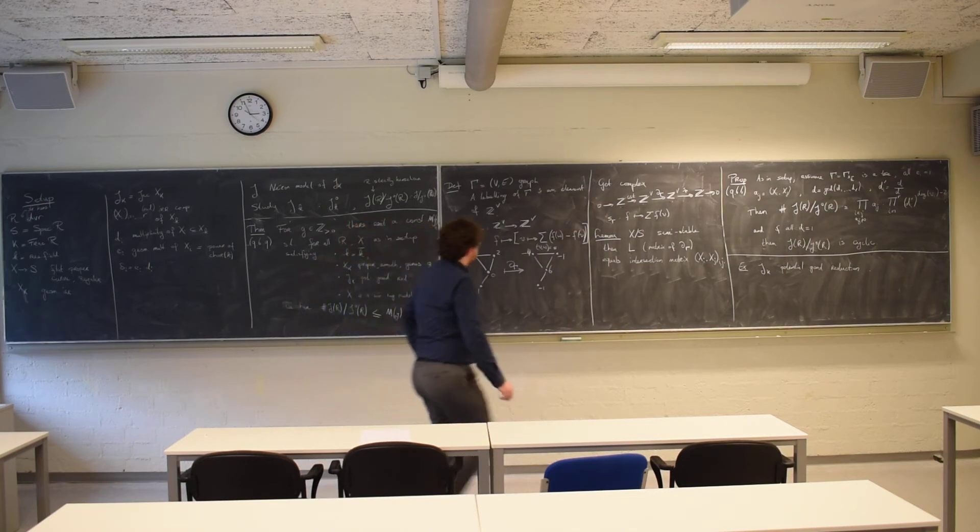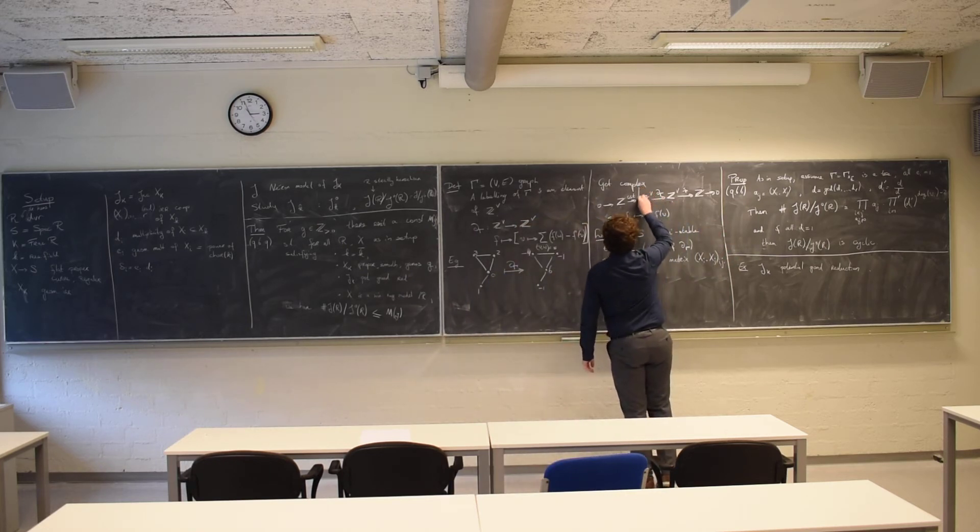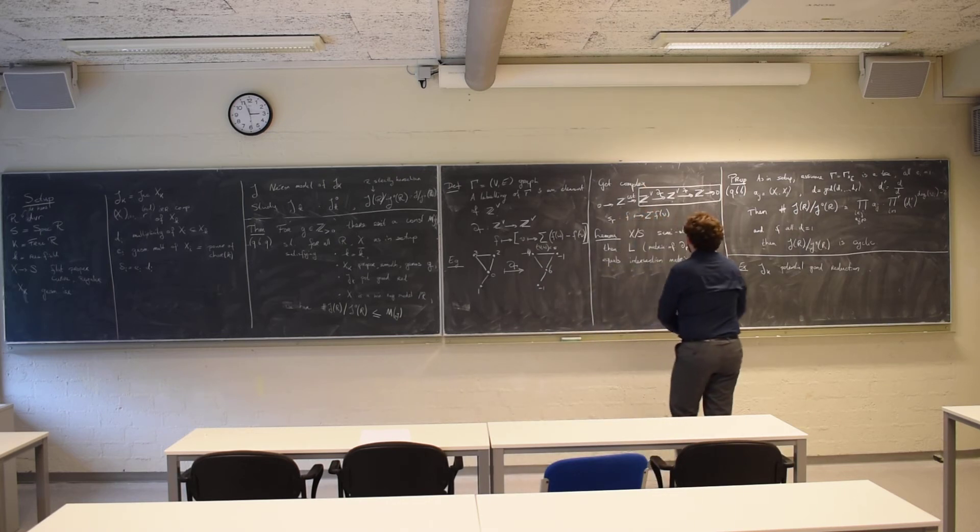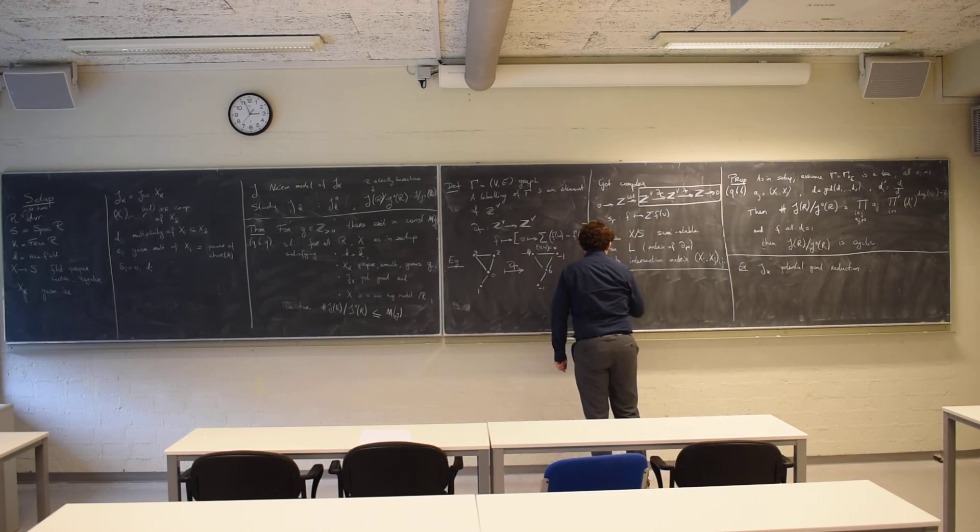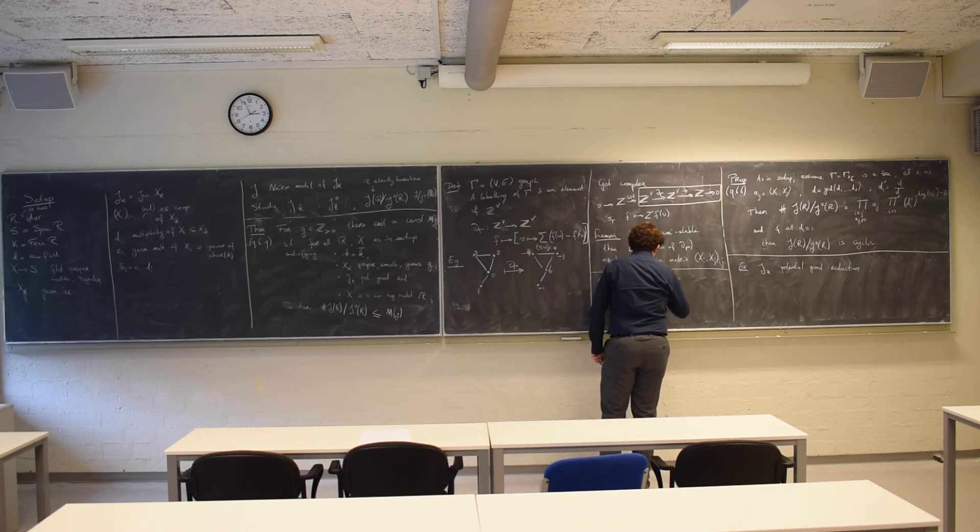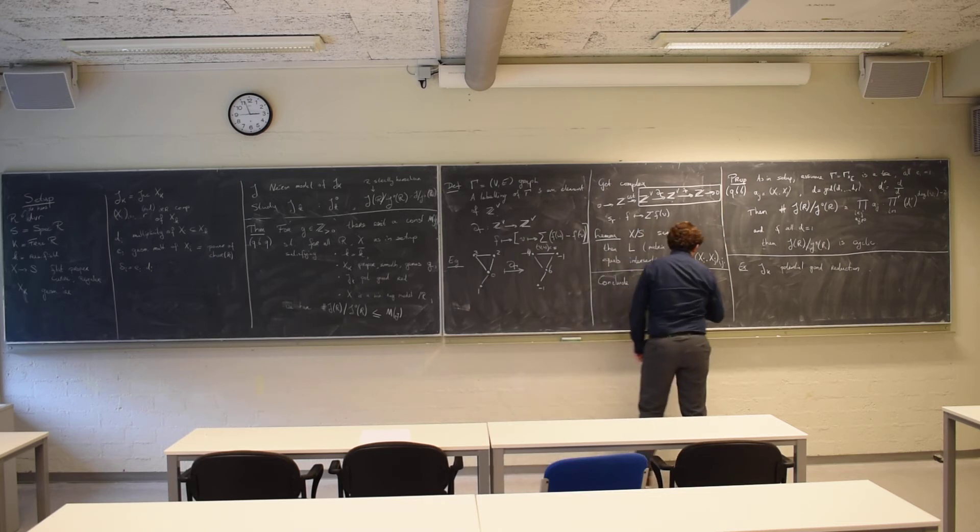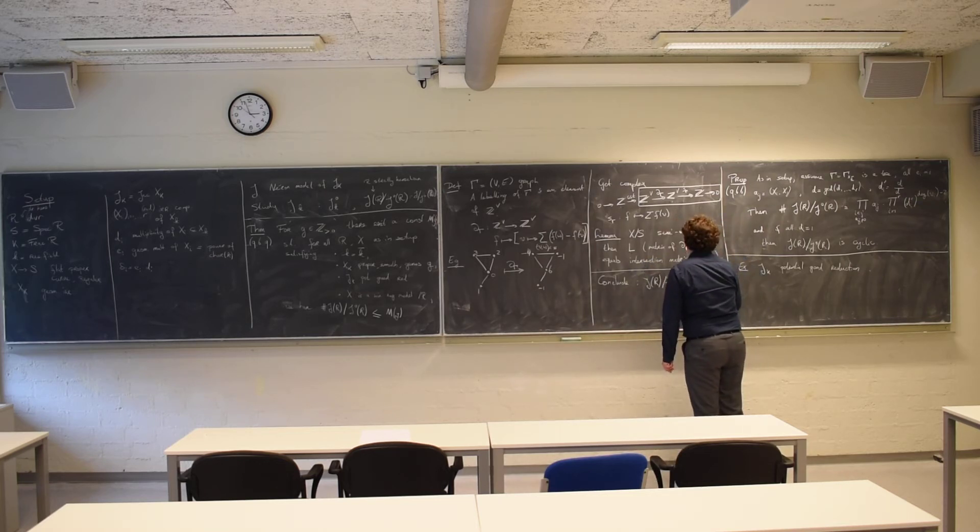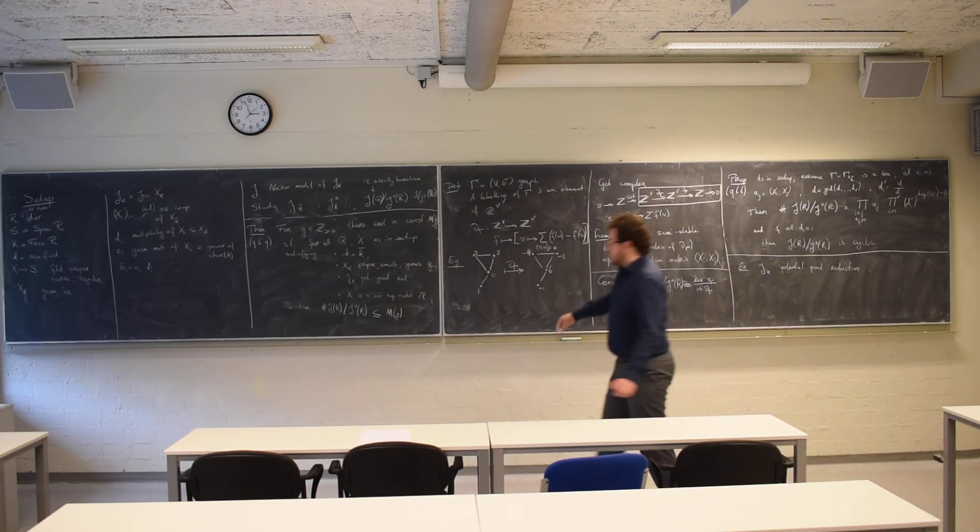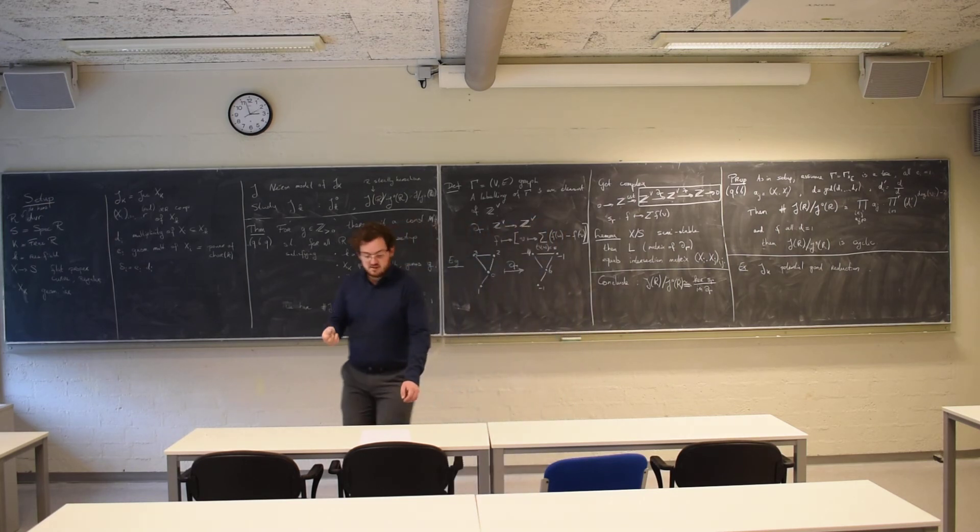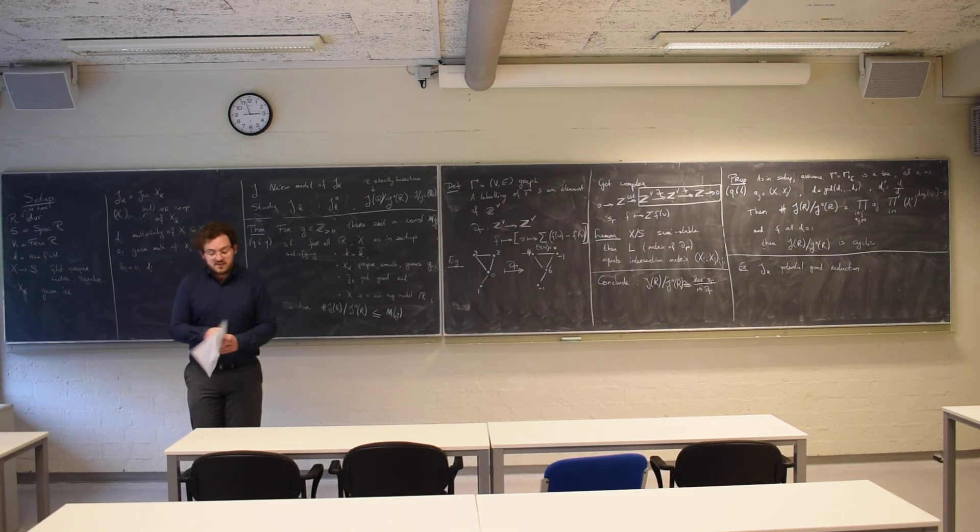And now this complex here, or at least this bit, looks quite a lot like the complex we had before with the alphas and the betas. And we conclude that this component group is canonically isomorphic to the kernel of S gamma. So you can do all of that just really in terms of the graph, and you can forget all the geometry. And that's where I would like to stop.